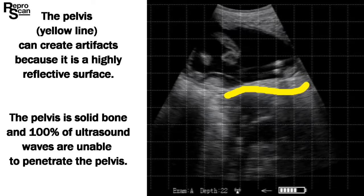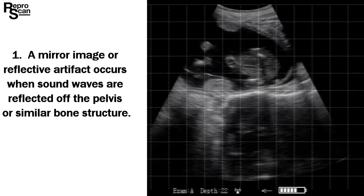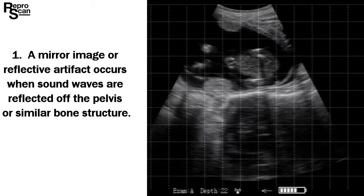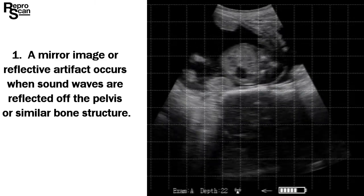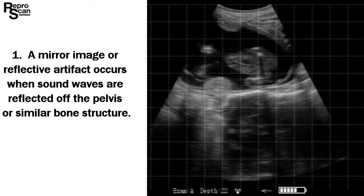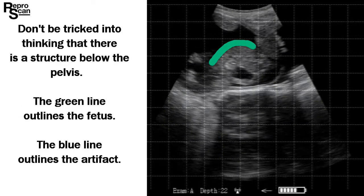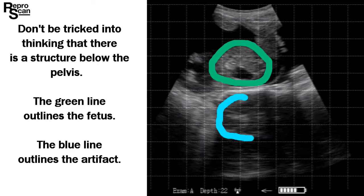The pelvis is solid bone and 100% of the ultrasound waves are unable to penetrate it. A mirror image or reflective artifact occurs when the sound waves are reflected off the pelvis or a similar bone structure. Don't be tricked into thinking that there is a structure below the pelvis. The green line outlines the fetus and the blue line outlines the artifact.